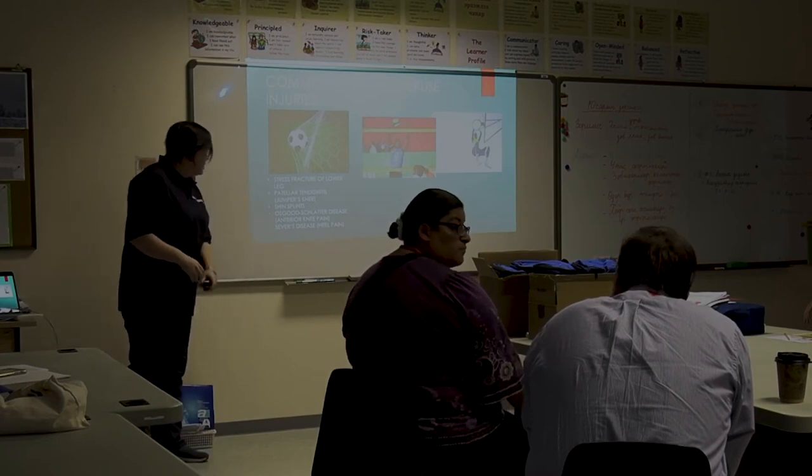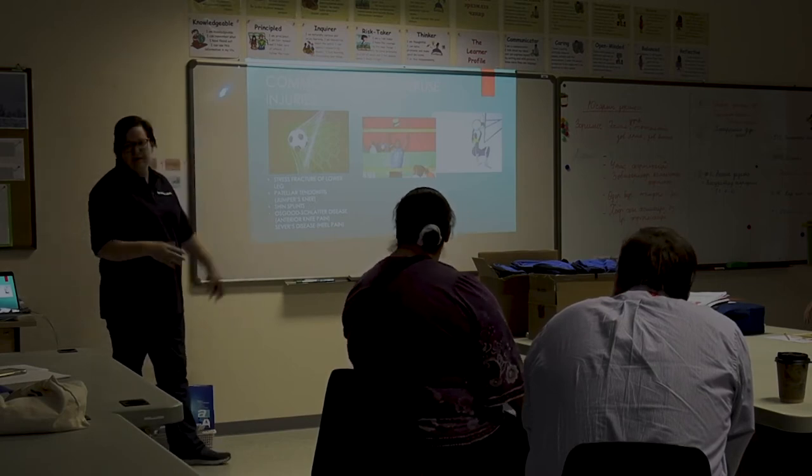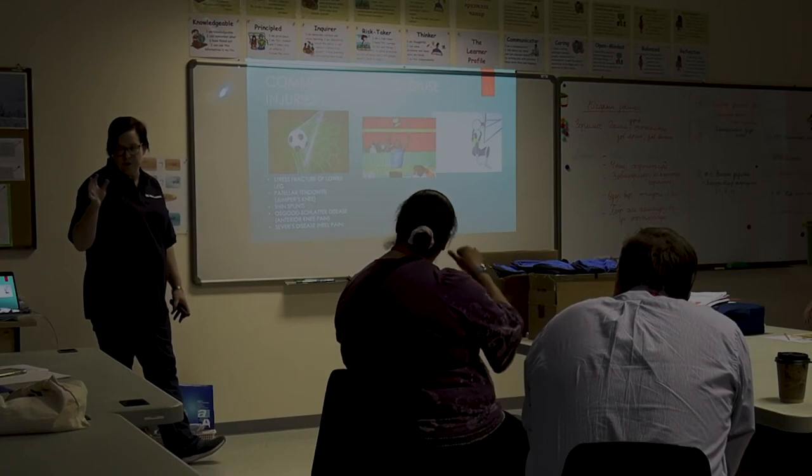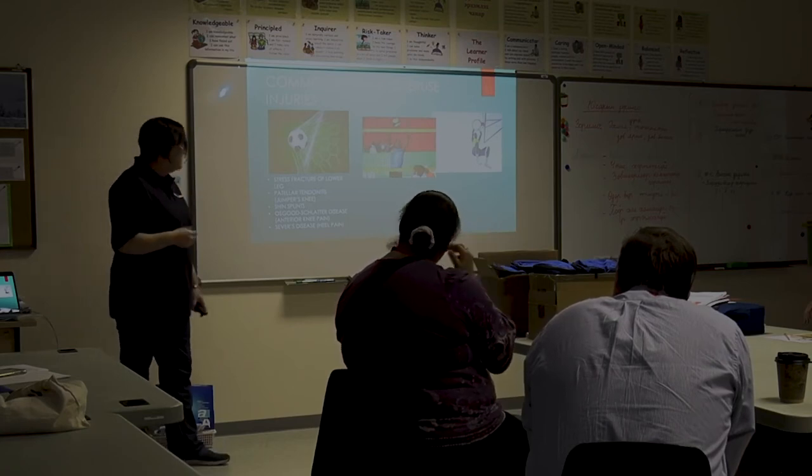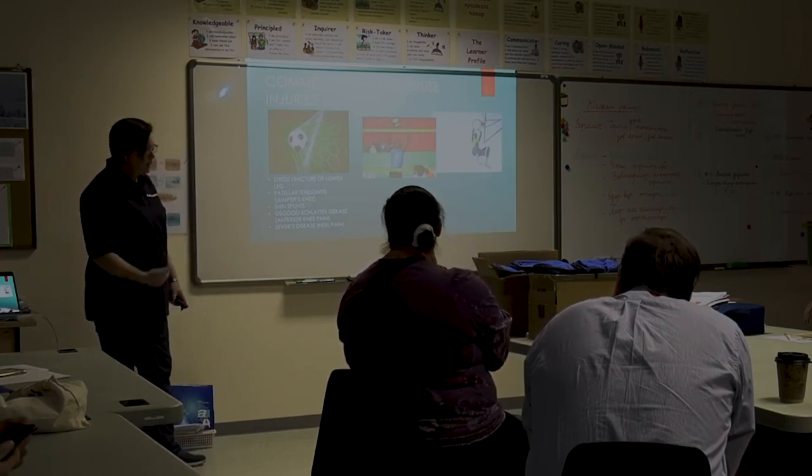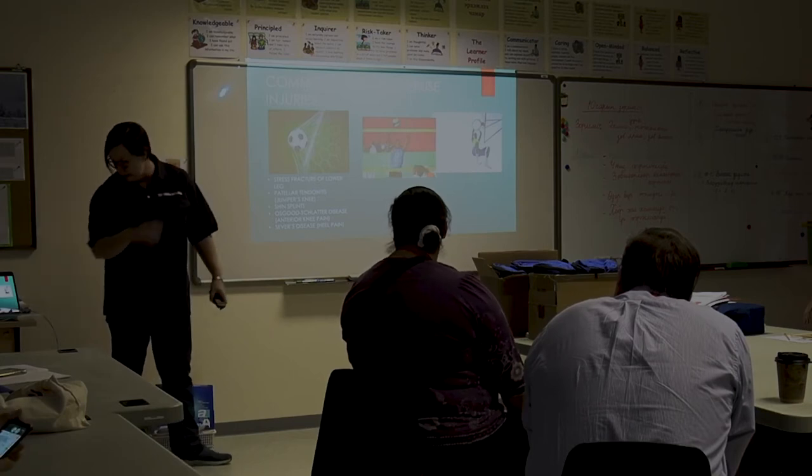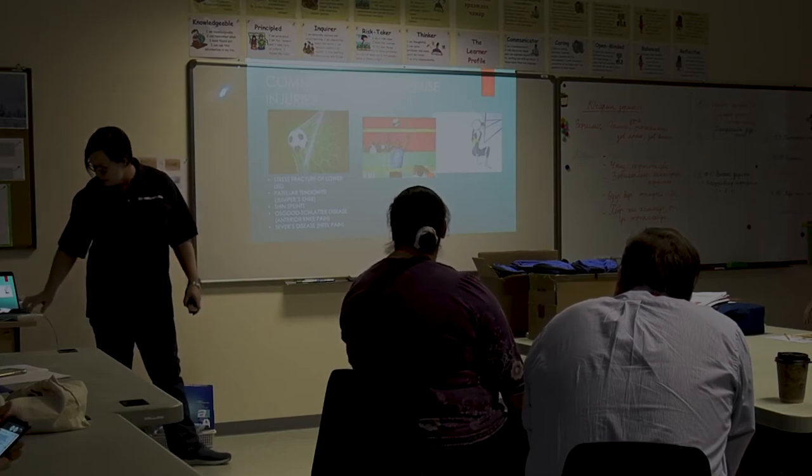Very common. Osgood-Schlatter and Sever's disease, it's very common from around 12 to 15 years old. Sever's disease is then at the heel. It's also very much related to Osgood-Schlatter syndrome.